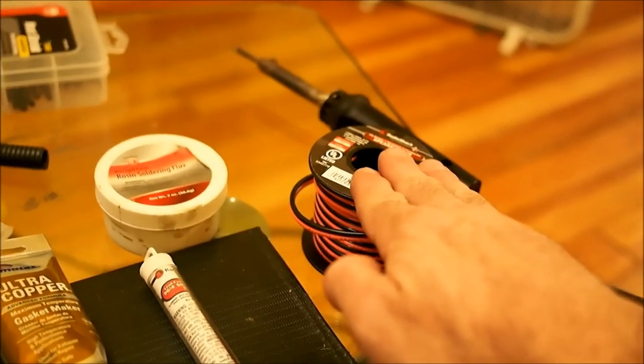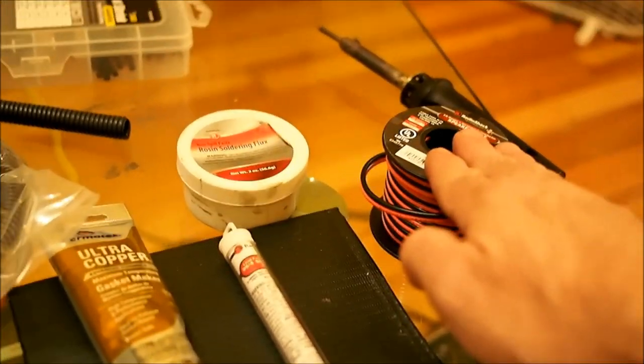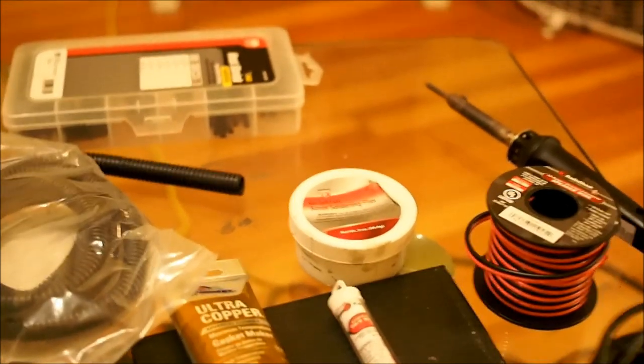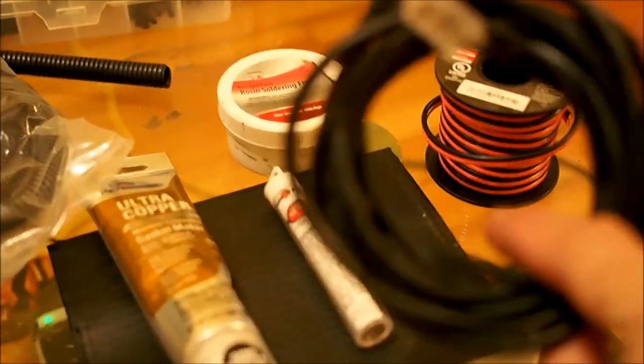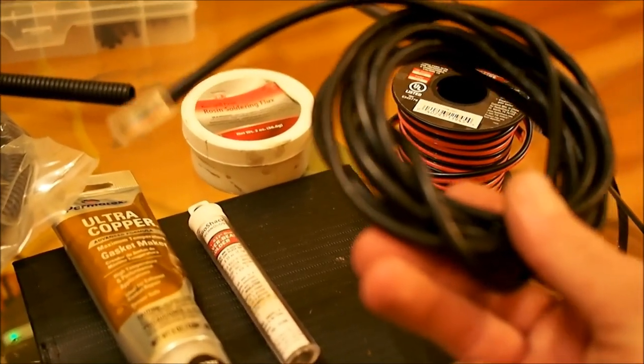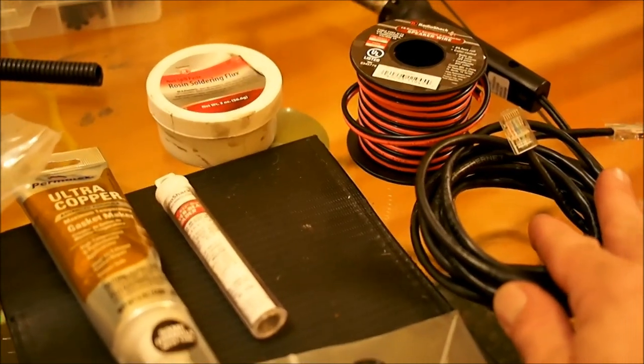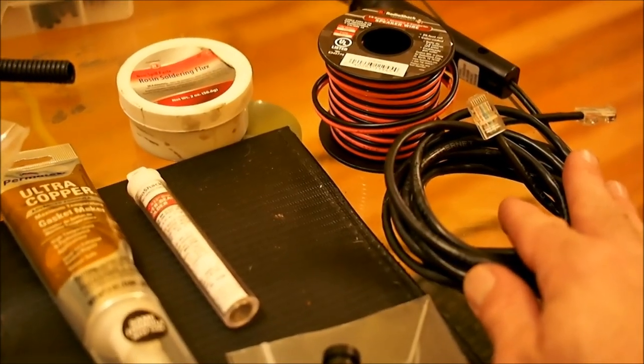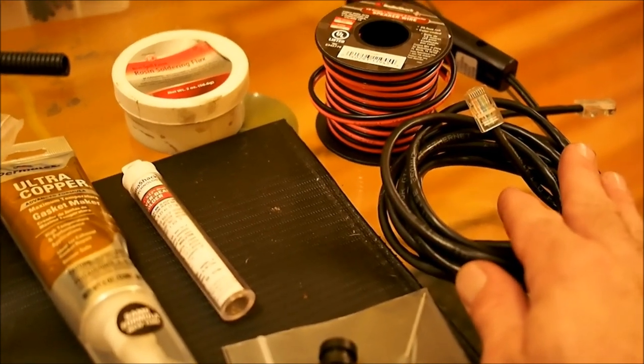We're using 18 gauge stranded speaker wire for the hotend itself. This should be a thick enough wire to carry the current that we need. But for the thermistor we're going to use this cable here which is a network Cat5 cable with a bad end. It's got this twisted pair stranded cable in it that works real nice for low current applications. So actually for the fan and for the thermistor we're going to use two different pairs of that.